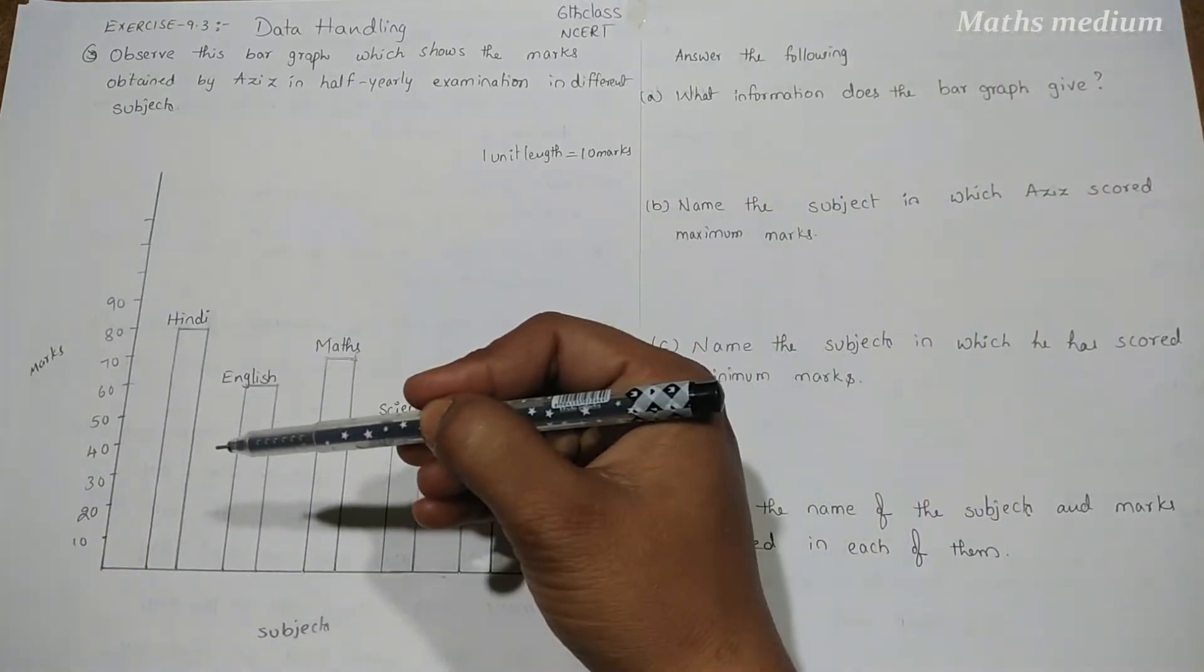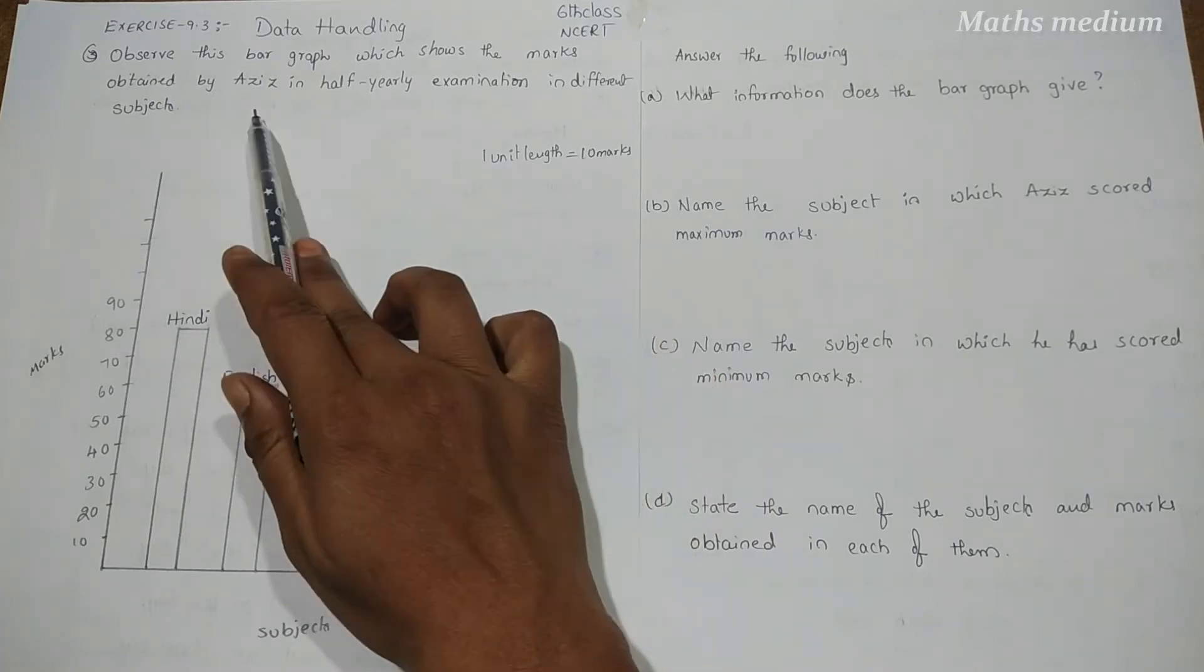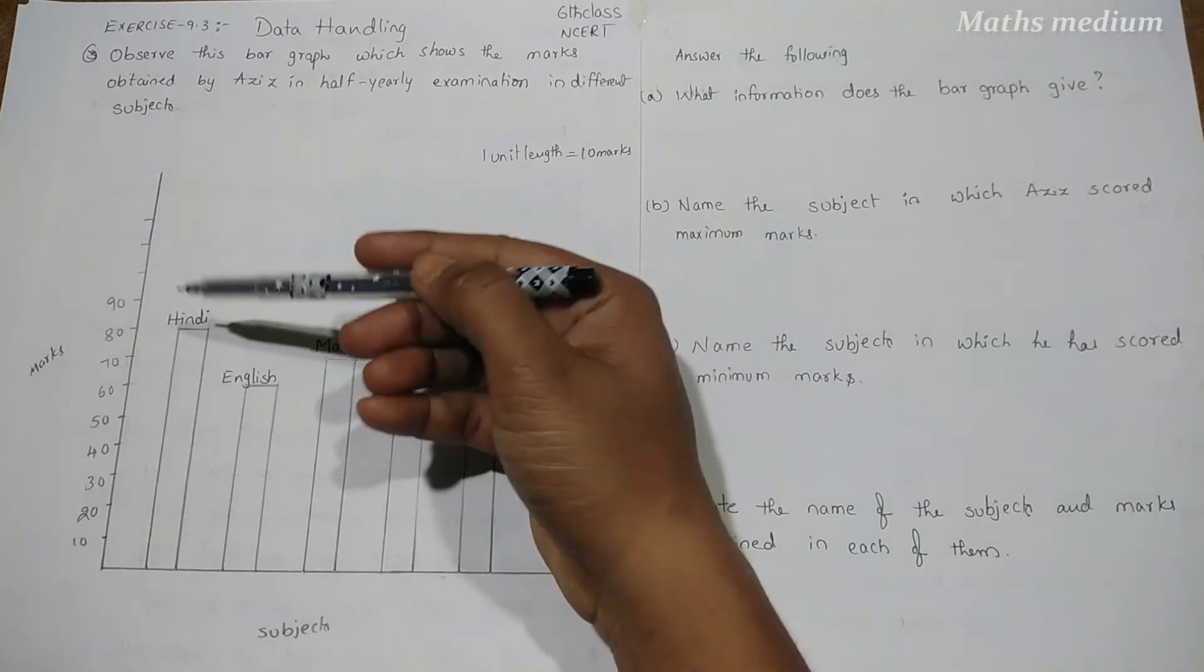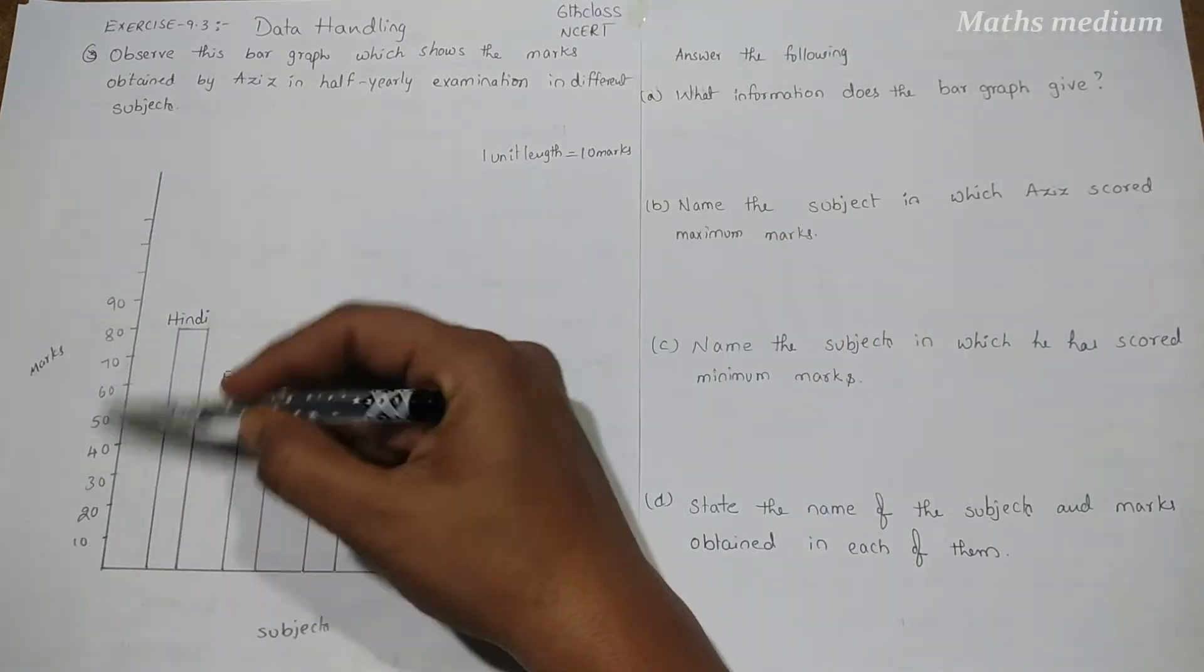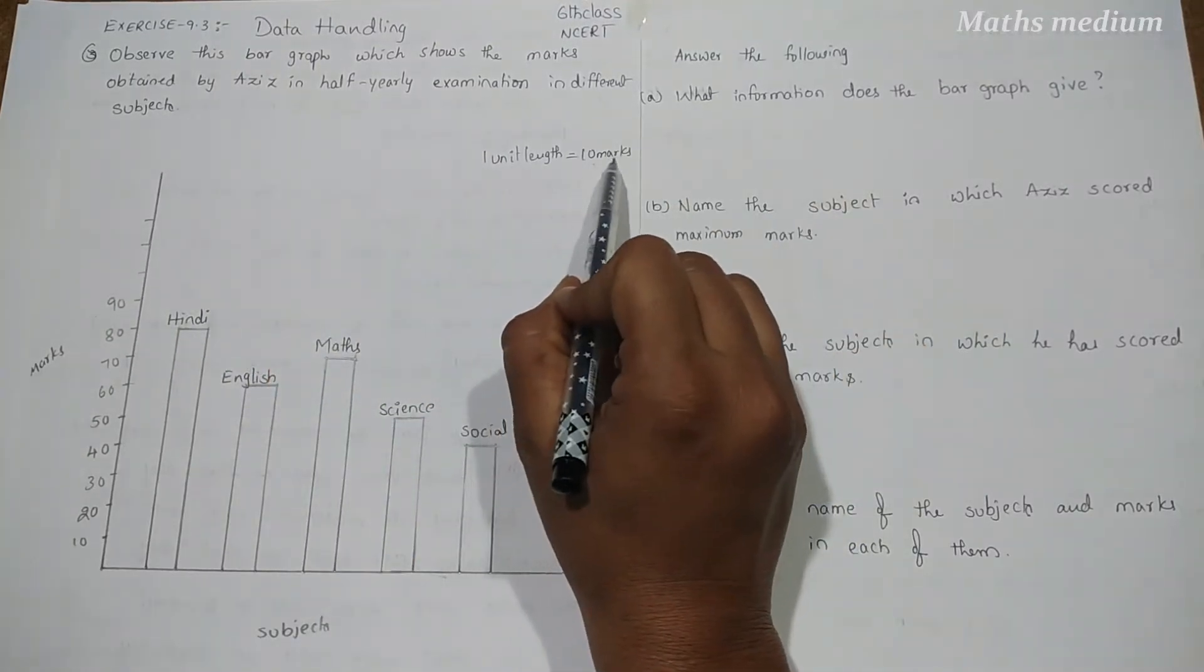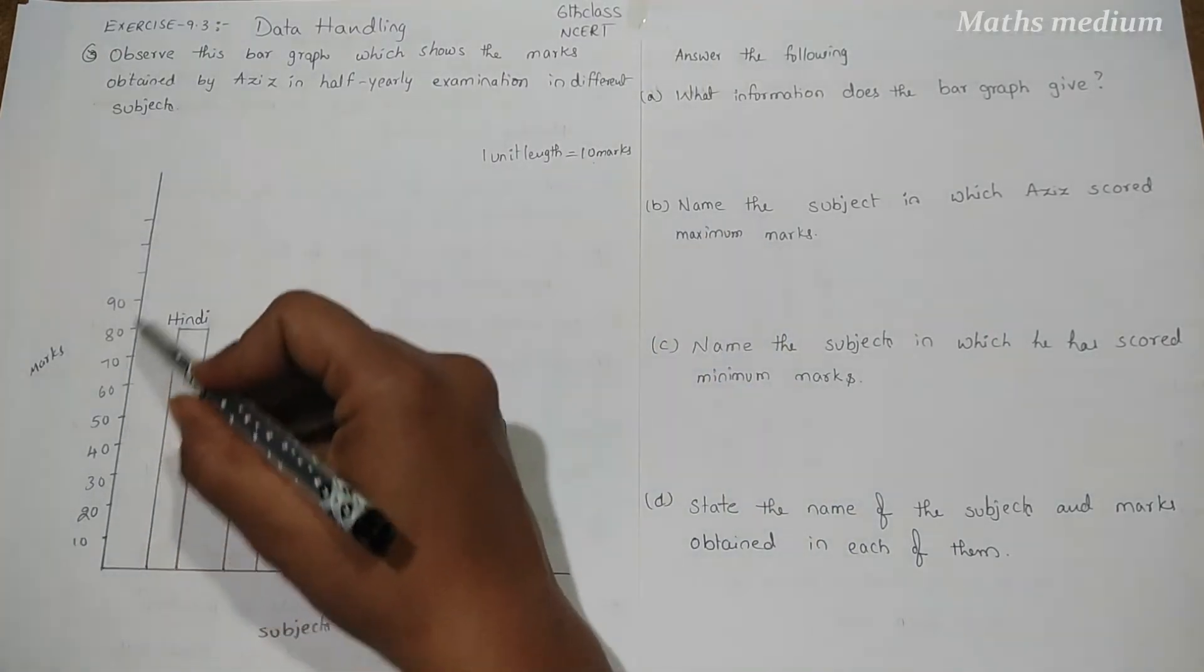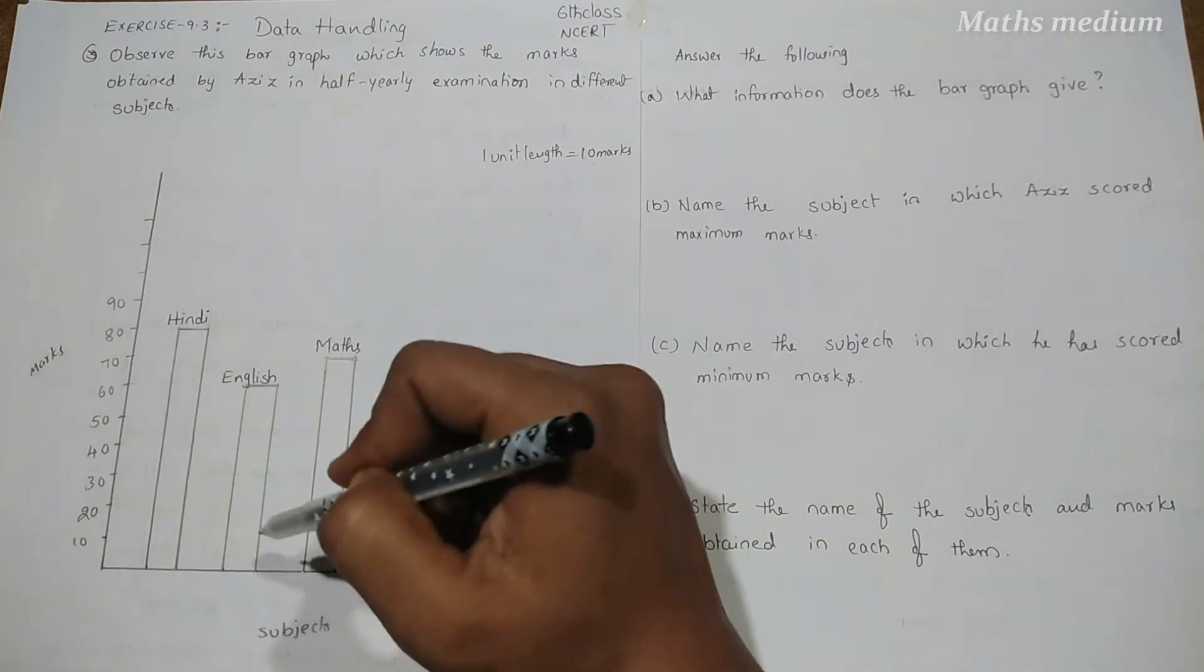Let's observe the given bar graph. This bar graph contains Aziz half yearly examination marks in different subjects: Hindi, English, Math, Science, Social. The marks range from 10 to 90. The scale is 1 unit length equals 10 marks. Each unit contains 10 marks. This is the information about the given bar graph.